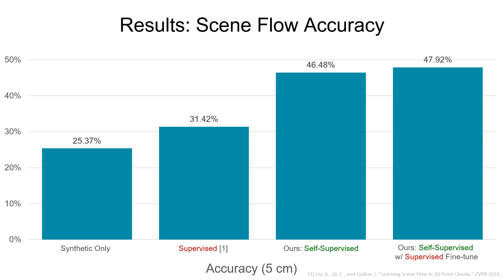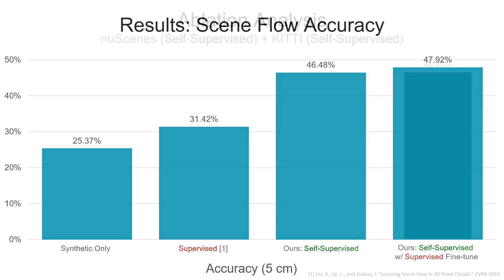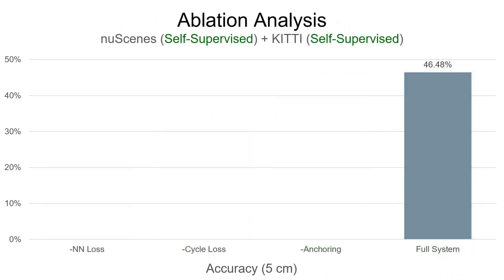We see similar trends in the 10-centimeter accuracy, as well as the endpoint error, though the endpoint error does see more improvement with the addition of annotated data. An ablation analysis shows the relative importance of the components of our method in the purely self-supervised case. When the nearest neighbor loss is removed from the system, we see a 30-percentage point drop in performance.